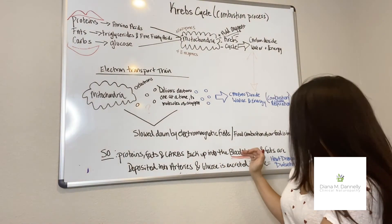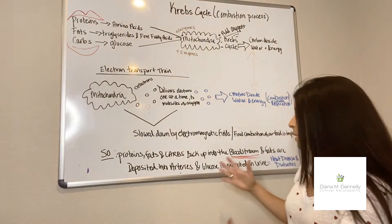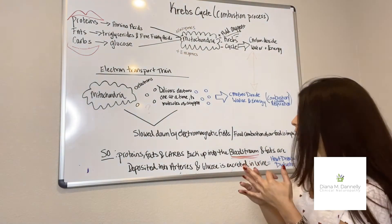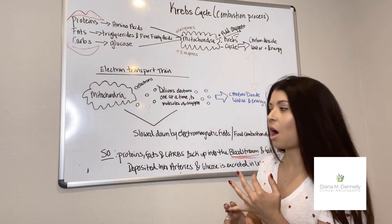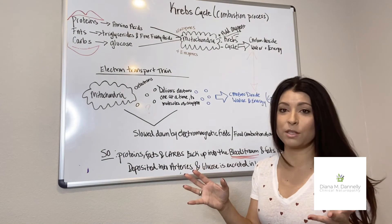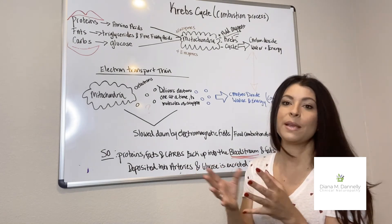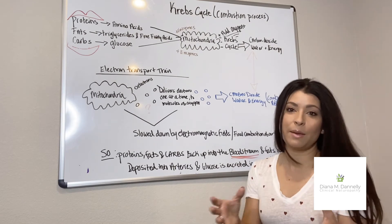So when that pairing process cannot happen, what happens is that combustion of our food becomes impaired. So basically, you have proteins, fats, and carbs that back up into the bloodstream. So then we get fats that are deposited into the arteries, and we also have glucose, which becomes too high in the bloodstream and also gets excreted through urine. So basically, what we're talking about is heart disease and diabetes here.